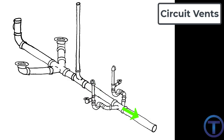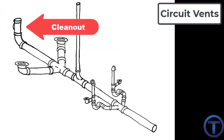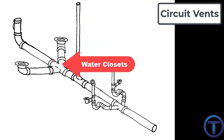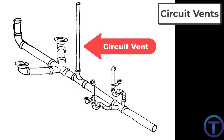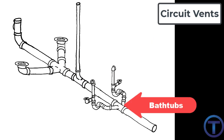To review: we have the upstream cleanout, double back-to-back water closet connections, the circuit vent in between, and two tub connections downstream from that. All of that is the circuit.